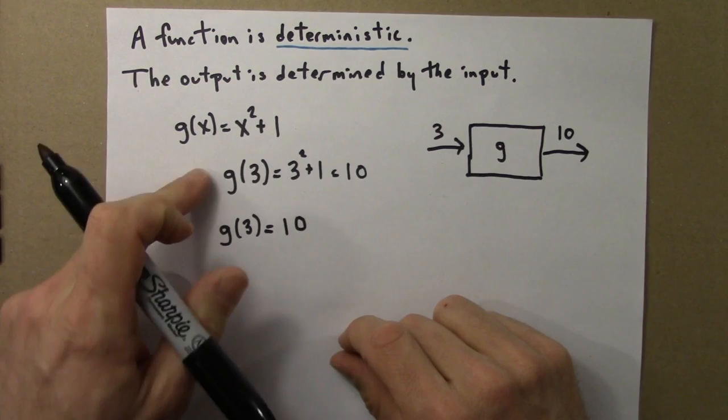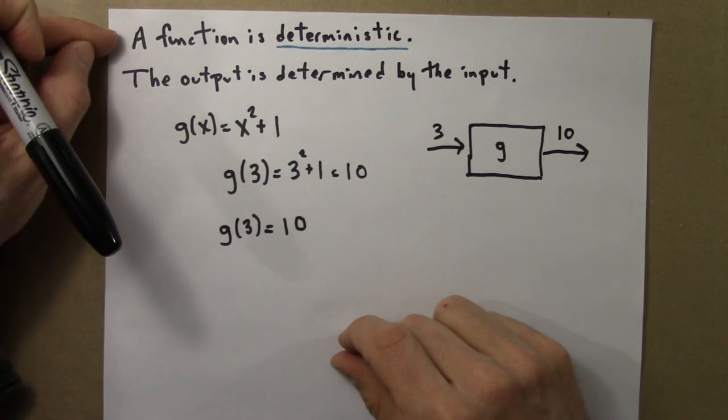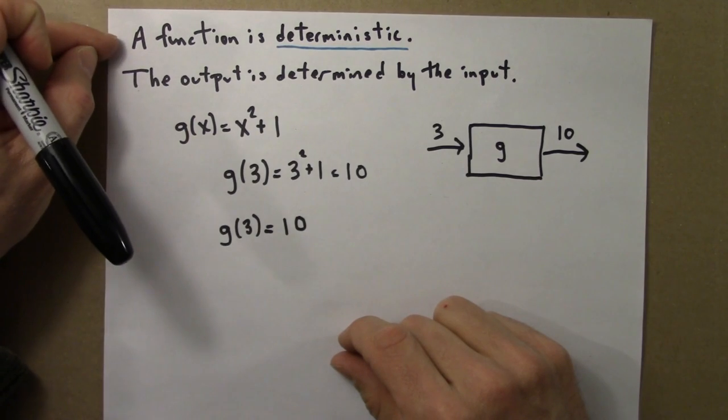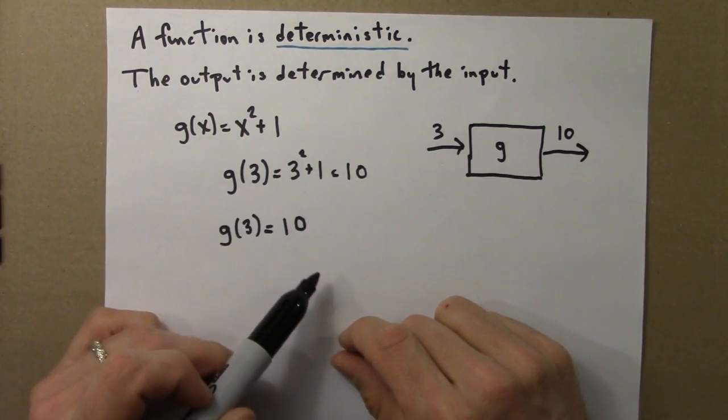So it seems silly to do this twice, but this underscores, this highlights what this determinism, what this deterministic property means. It says that if you tell me the input, the output is determined.